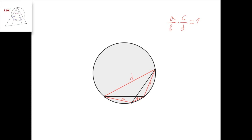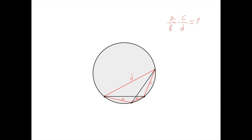Previously, we defined the cross-ratio not only for four points lying on a line, but also for four points lying on a circle. And then we defined the harmonic division for four points lying on a line as the cross-ratio equals 1. But we never defined the harmonic division for four points that lie on a circle.